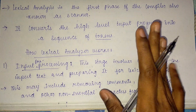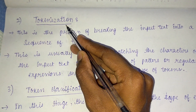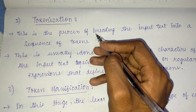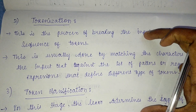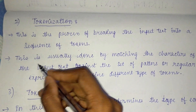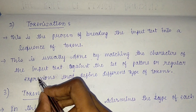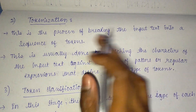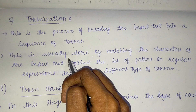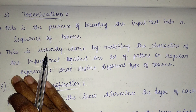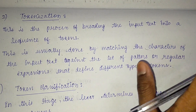Next comes tokenization. Tokenization is the process of breaking the input text into a sequence of tokens. This is usually done by matching the characters of the input text against a set of patterns or regular expressions that define different types of tokens.